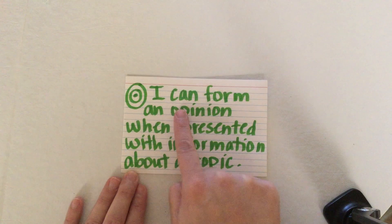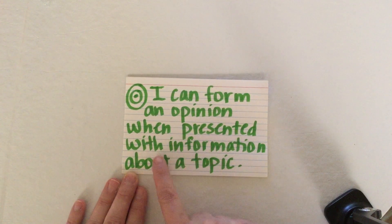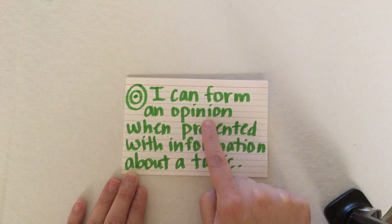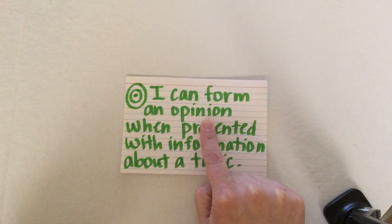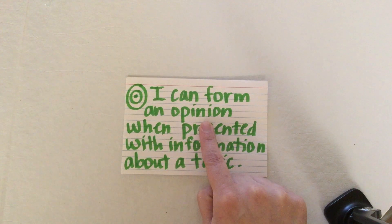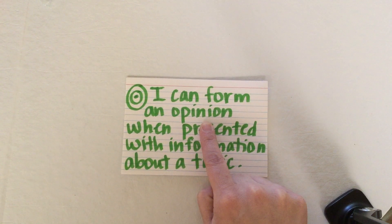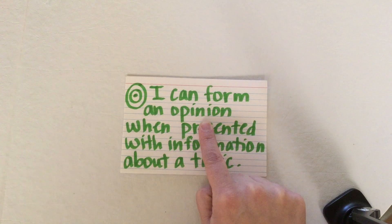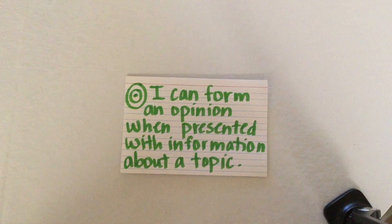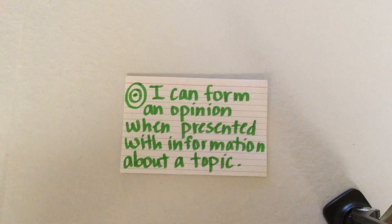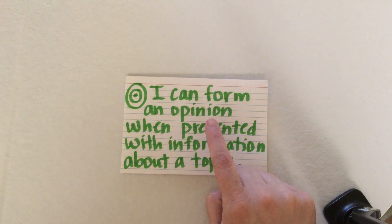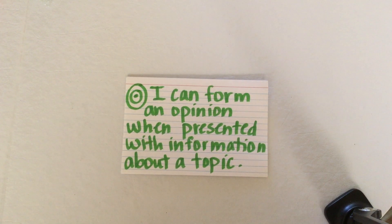Our target today is: I can form an opinion when presented with information about a topic. The word opinion means that you have a feeling about something — you like something or you feel strongly about something. A lot of times we have different opinions. My favorite food might be pizza; that is my opinion. But my sister's favorite food might be a hamburger. There are ways that we express our opinions respectfully. Remember, an opinion means you have a strong feeling about something.